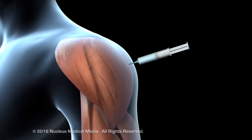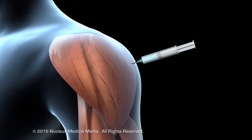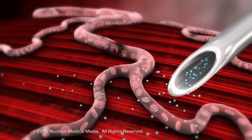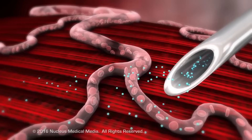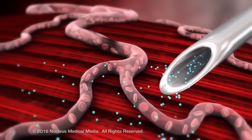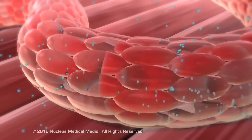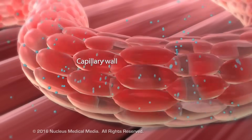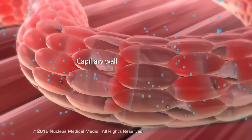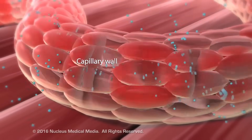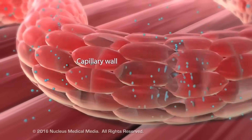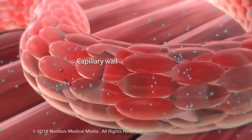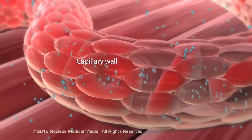If administered through intramuscular or subcutaneous injection, the drug enters either muscle or subcutaneous tissue, where it passes through gaps between cells into capillary walls and then into general circulation or target organs, also bypassing absorption in the GI tract.